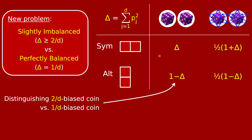Your task is like telling the difference between a coin biased to come up heads with probability either 1/d or 2/d. If you know a little statistics, you know that to confidently distinguish these two biases, you need something proportional to d measurements. If you take, say, 50 times d pairs of dice, you'll get roughly 50 times one histogram or at least 100 times the other — and that's how you tell the difference.